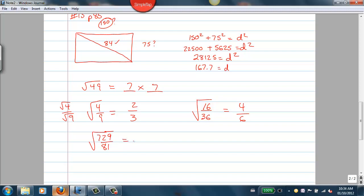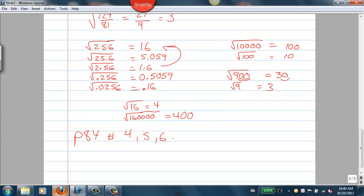In a case like 729 over 81, you've got a couple of choices. You could take the square roots to get 27 over 9 and divide that to get 3, or you can divide the 729 by 81, which actually equals 9, and then take the square root of 9 and get 3.